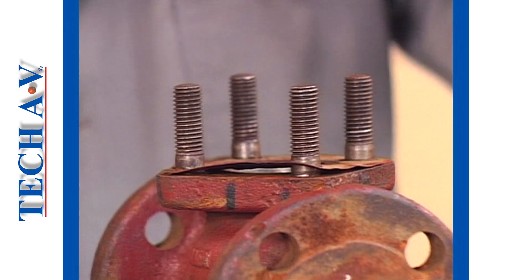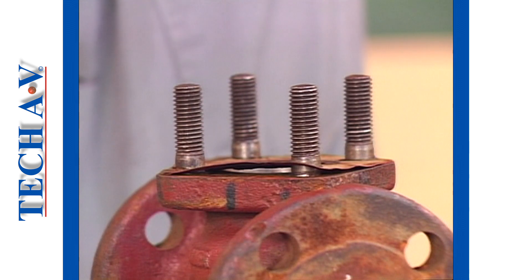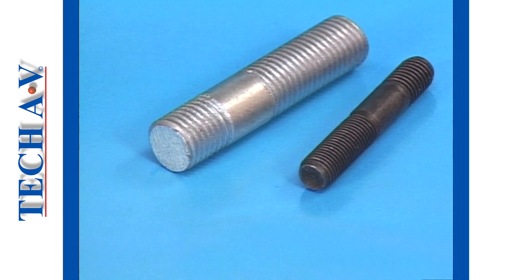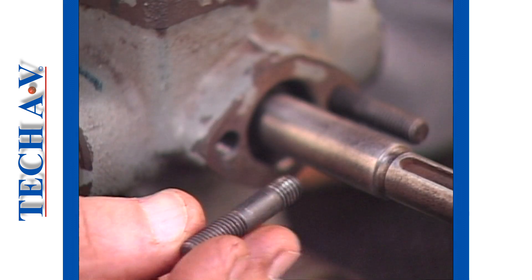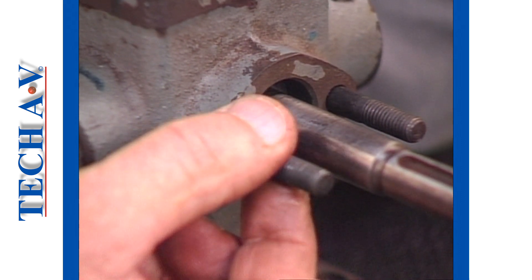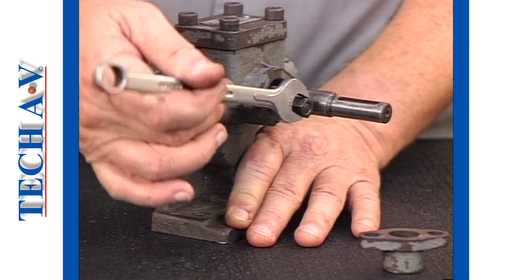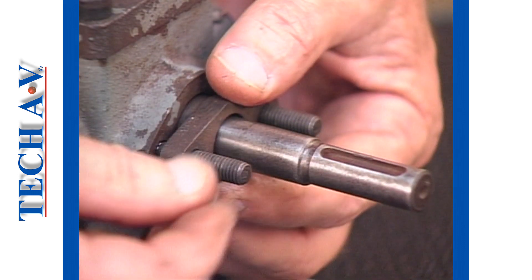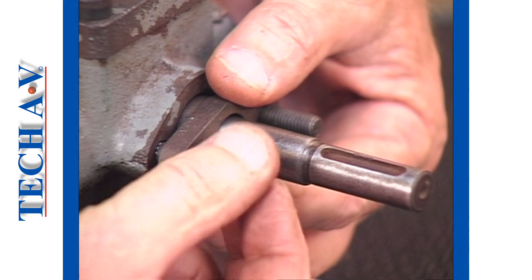The next common fastener type we shall look at is the stud. Studs are basically headless bolts, consisting of a shank, a plain center section, and threads at each end. You may see that one threaded section is shorter than the other. The short threads are used, like set screws, to thread the stud into the main component. The stud is secured firmly, and the component placed over the studs, as demonstrated. Once in position, the component is secured using nuts.